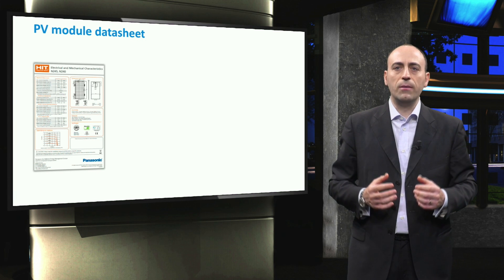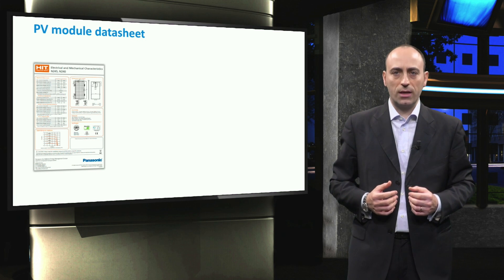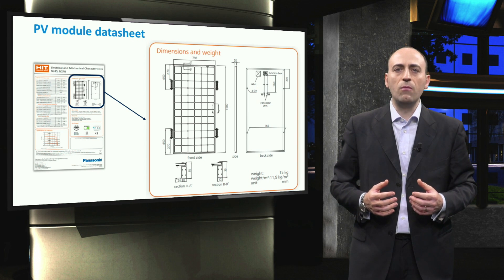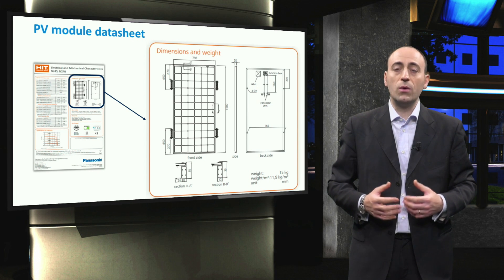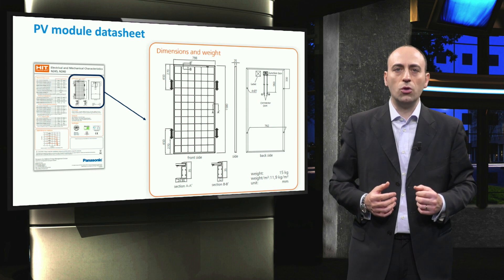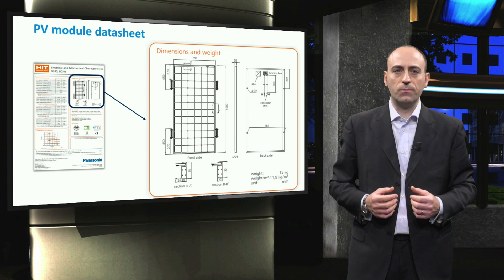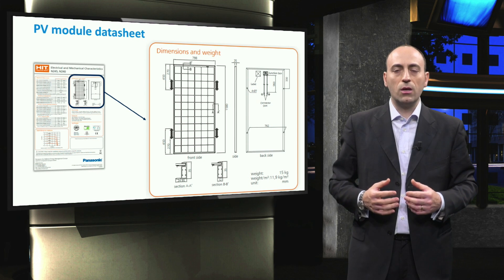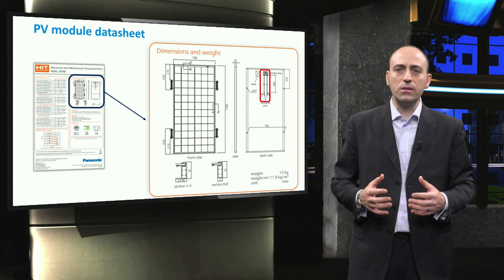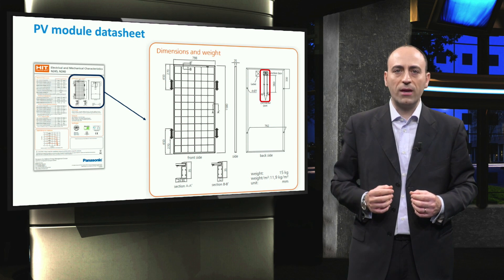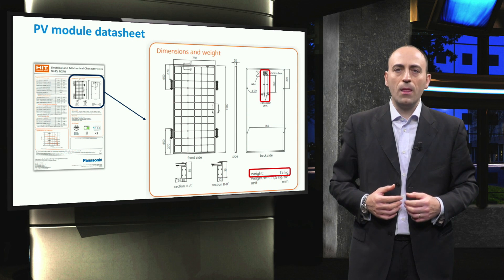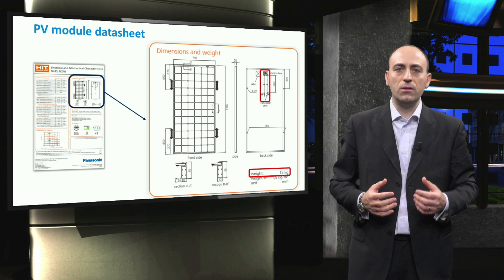This is the datasheet of a PV module by Panasonic based on heterojunction technology. The enlarged area indicates the dimensions and weight of the PV module. The dimensions of the PV module are important for PV system design, in order to estimate the total irradiance incident on the module and the space required for the installation. Starting from the left-hand side, we have front side and back views of the PV module, including the frame and the junction box. The junction box is represented by the little square on top of the back view with the connectors attached to it. The weight of the module can be found underneath this figure. The weight can be an important property if the area on which the modules are installed has limited weight-bearing capacity.